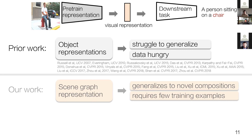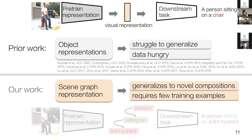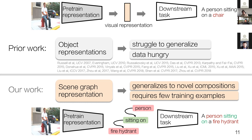Our main insight is that we need a new representation—one that can understand and focus on all the individual parts of the image, not just the objects. We call this representation scene graphs, and pre-training models on scene graphs will help them generalize to novel compositions like a person sitting on a fire hydrant. Because this representation captures more information compositionally, downstream models will need far fewer training examples.